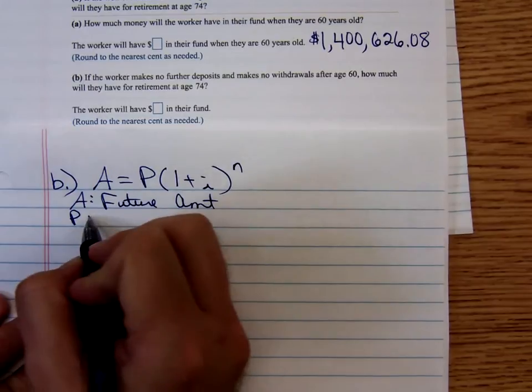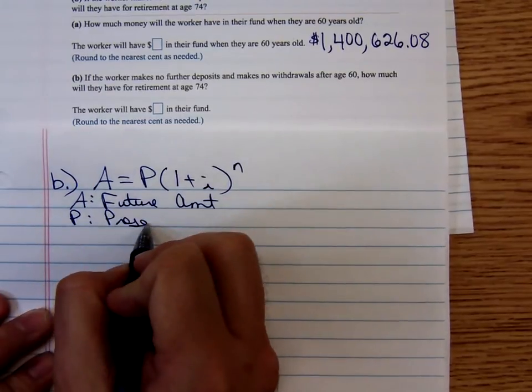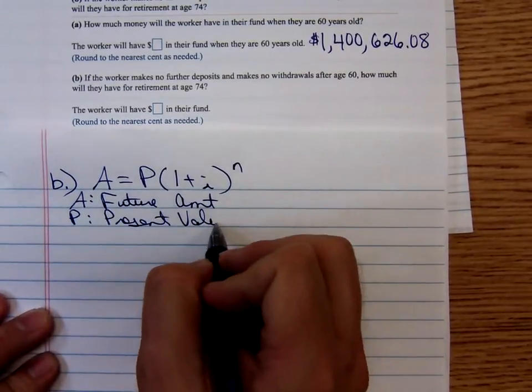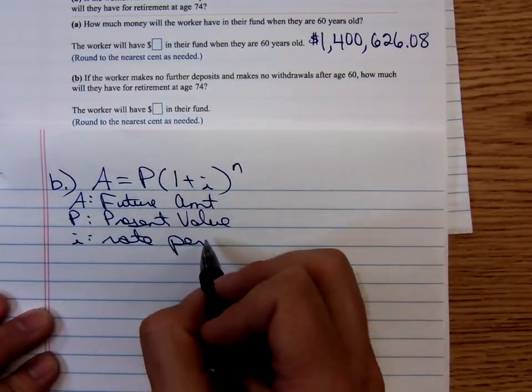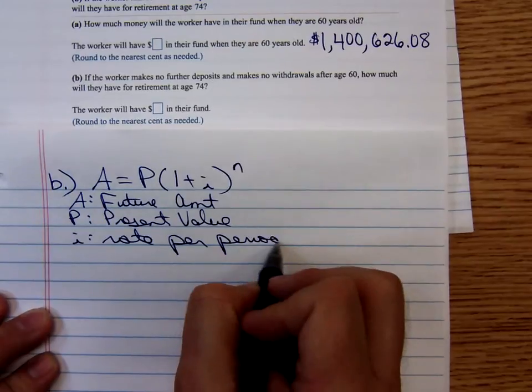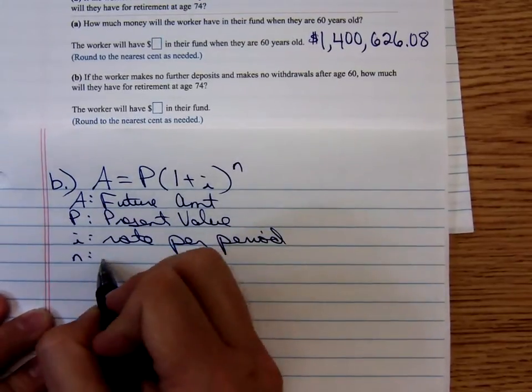P is the present value or the principal, i is the rate per period, and n is the total number of compound periods.